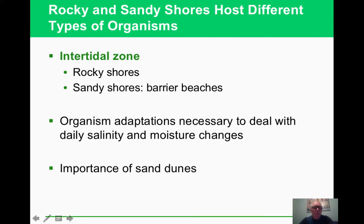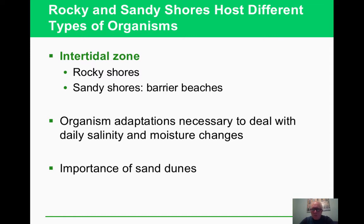The intertidal zone is sometimes covered with water and sometimes not — an in-between area. Animals there have to be able to grab onto things or dig into the sand when waves come. They've got interesting adaptations and have to have a wide range of tolerance because sometimes it's going to be saltier, sometimes freshwater, with lots of changes during the day and year. The sand dunes that people like to develop on because of the ocean view — people don't like them because they block the view, but they do provide a natural buffer when storms come in. When we get rid of sand dunes, we lose that protection as well.